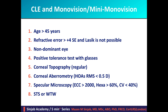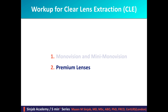To sum up: the patient should be older than 45 years; refraction should be on the plus side and more than plus 4 diopters spherical equivalent, and LASIK should not be suitable; the non-dominant eye should be determined; the patient must show a reasonable positive test with glasses and be comfortable with contact lens trial; the cornea should be regular and corneal aberrometry should show RMS less than 0.5 diopters for coma and trefoil; specular microscopy should be studied carefully; and sulcus-to-sulcus or white-to-white must be considered in axial or extreme refractive errors. In the next video, I will talk about the workup when premium intraocular lenses are planned.